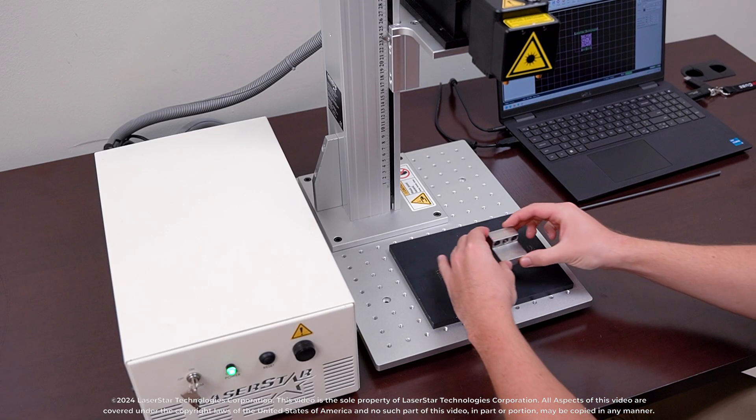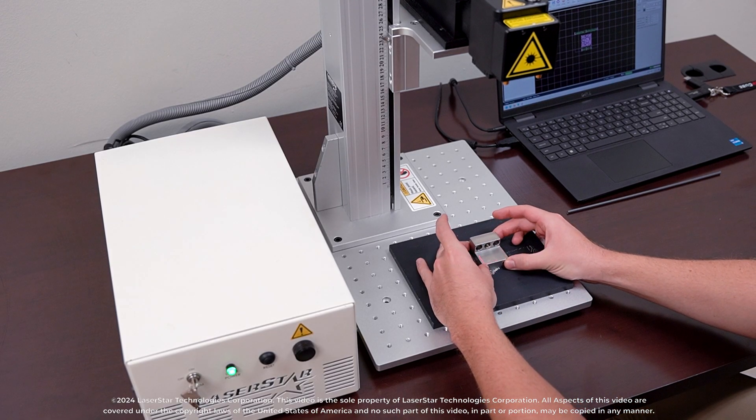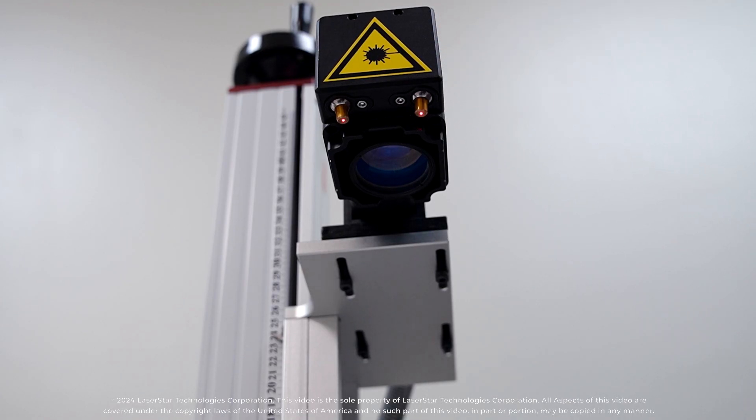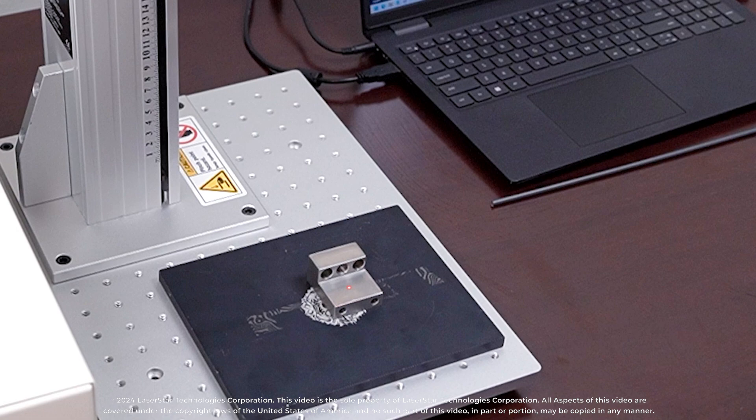The 3201 coupled with our Starfax software makes marking and engraving a breeze. With a press of a button, you can turn on and off the red pointing diodes to assist with quickly adjusting the system into focus.